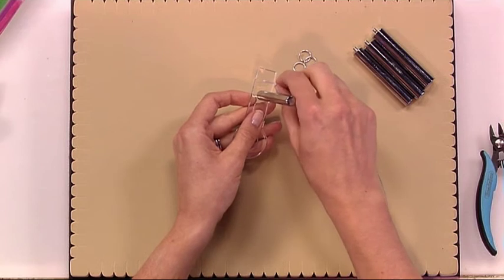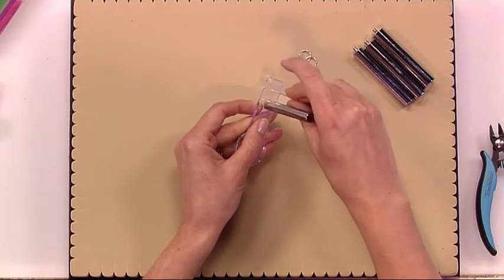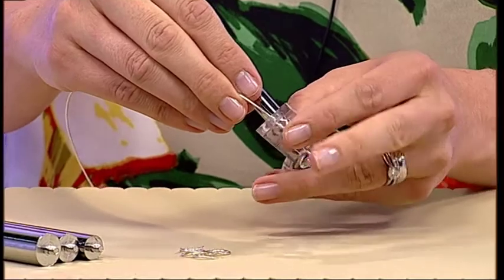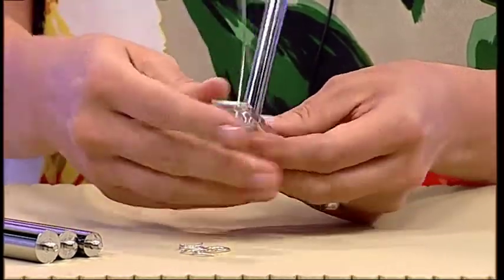You just post that through the hole in the top of the perspex key, fold it over.